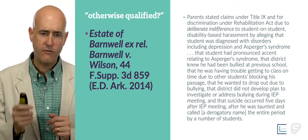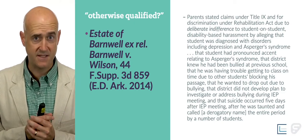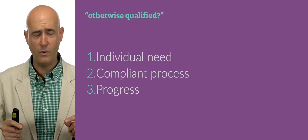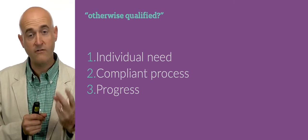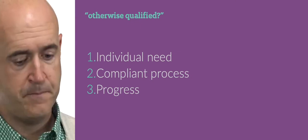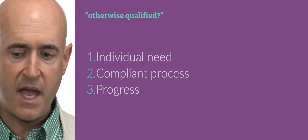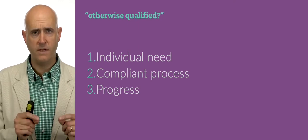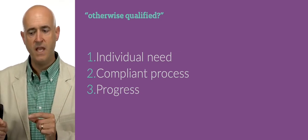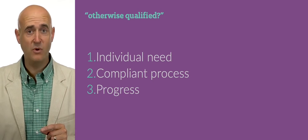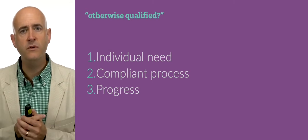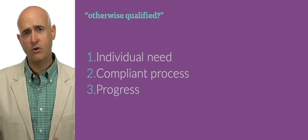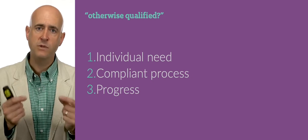The take-home from that case — and from most of these cases — comes back to three principal best practice points, whether it's IEP or 504: we need to be aware of individual need, compliant process, and progress. Need, process, progress. 'Otherwise qualified' speaks to need. Can the individual complete our curriculum, honor our code of conduct? In the university or medical school setting, can they complete the rigorous curriculum? In employment, can they complete their duties? In elementary grades, can they complete the tasks? Are they resident in our district and of the correct age? If the answer to any of those questions is no, that individual is not protected by 504.